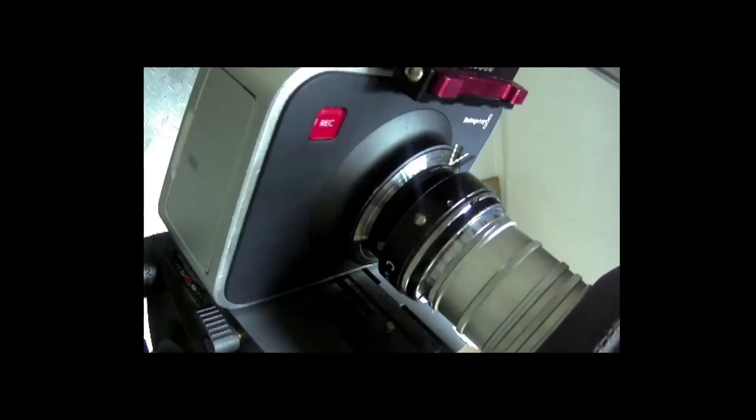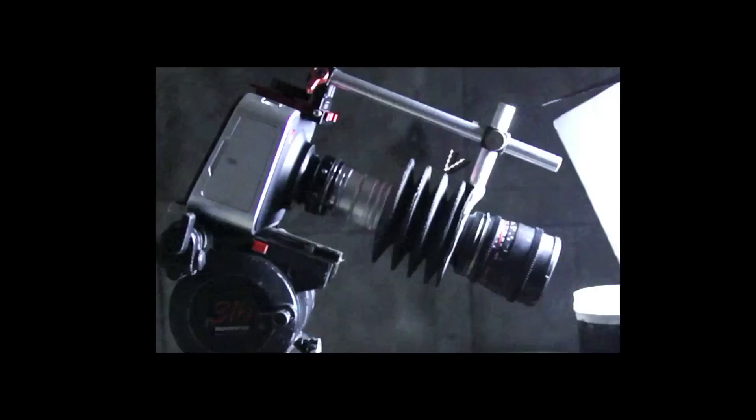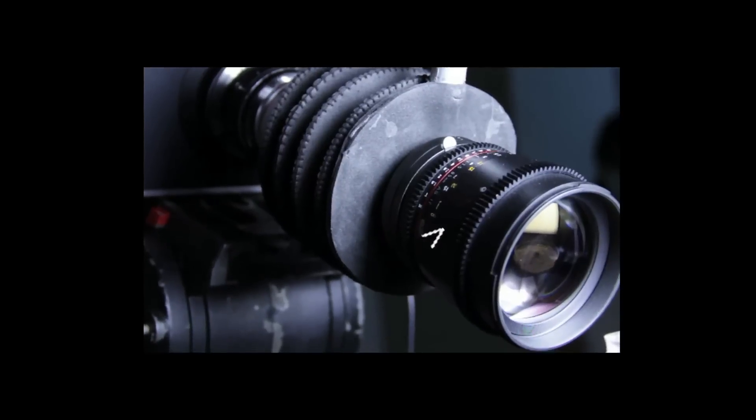This is a micro four-thirds to C-mount adapter, and this is a Minolta to C-mount adapter. Then I placed my Minolta extension tubes, then the rubber bellows, then the EF adapter, and finally the EF Samyang 85mm.